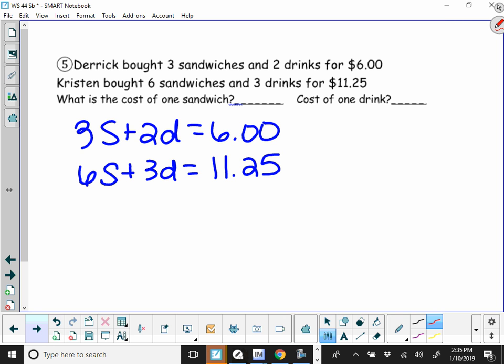the easiest thing to cancel is going to be our sandwiches. So you're going to multiply the top by negative 2, which is going to make that a negative 6 sandwiches minus 4d. And negative 2 times $6 is negative $12.